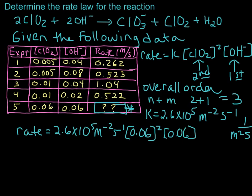And as we do that, we're going to end up with molar per second again for our rate, which is a good thing because that's what we have up here. And let's go ahead and plug everything into our calculator. And so when we do that, we multiply 2.6 times 10 to the 5th times 0.06 squared times 0.06,